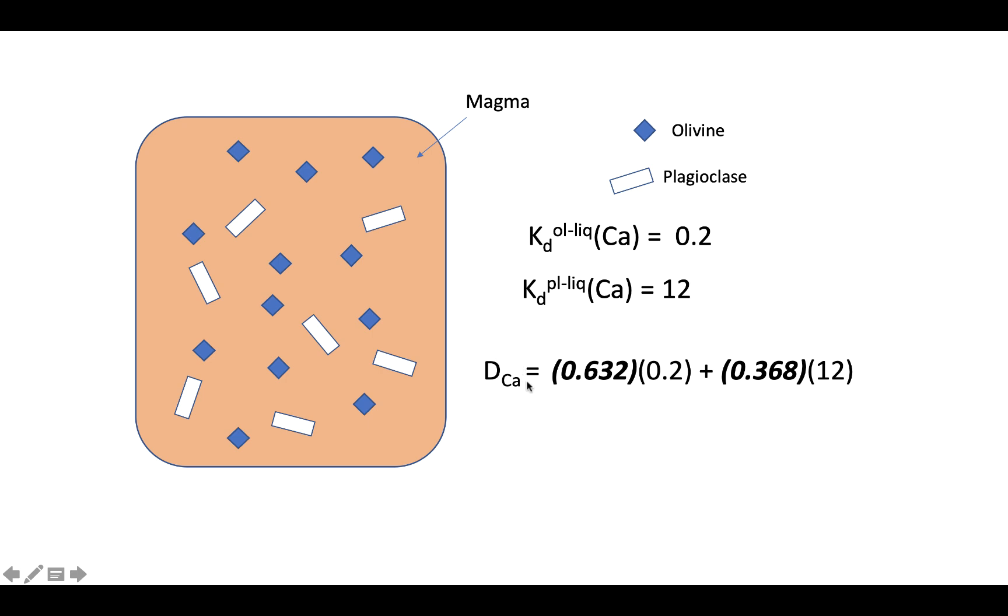The bulk distribution for calcium would be the amount of olivine, 63.2%, multiplied by its partition coefficient, 0.2, plus the amount of plagioclase, 36.8%, multiplied by its partition coefficient, which is 12. And we'll get a bulk distribution coefficient of calcium of 4.55, a little bit less than we found for nickel.